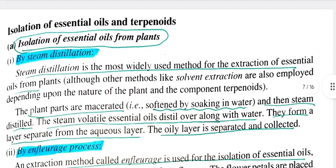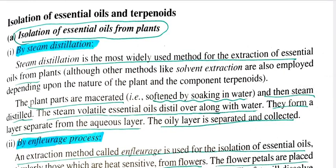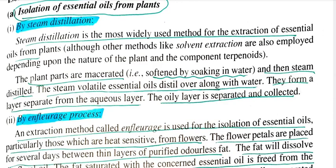This is the isolation of essential oils and terpenoids. Steam distillation is the most widely used method for the extraction of essential oils from plants. The plant parts are macerated and then steam distilled. The steam molecules and essential oil distill over along with the water, forming a layer separate from the aqueous layer. The oily layer is then separated and collected.